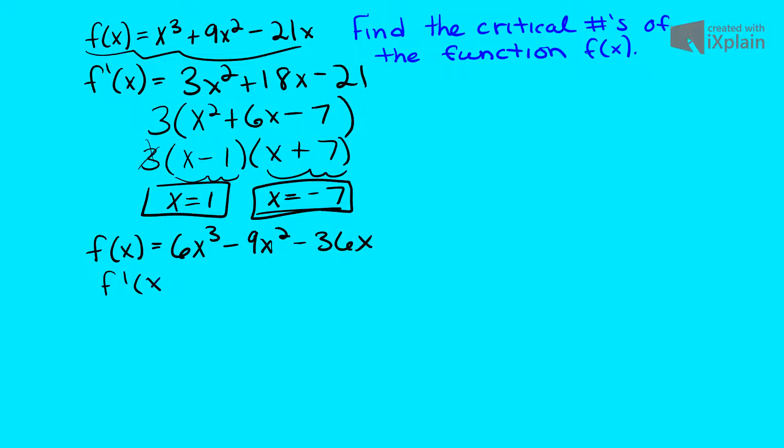So we get f prime of x is equal to 18x squared minus 18x minus 36, and from here we're going to simplify it once again. The one factor that's a like term within all these is 18, so we pull out 18, we get x squared minus x minus 2, and simplifying it even more, we get x plus 1 multiplied by x minus 2.